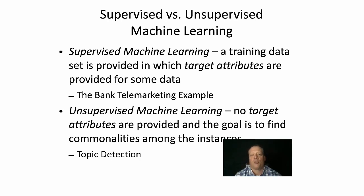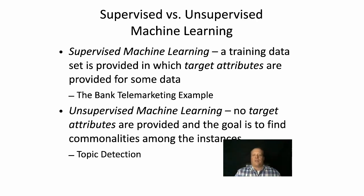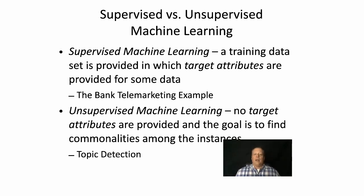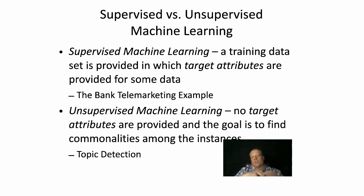Another distinction we need to draw is between supervised learning and unsupervised learning. In supervised machine learning, a training data set is provided in which the target attributes are provided — for example, in the bank telemarketing dataset we know whether someone took the promotion. But in some cases we just want to explore the data, or we're not sure what the labels are, and there is no target attribute — the goal is to find commonalities. Topic detection is a classic example: if I give you a bunch of tweets and say find the topics they share, you don't have that list ahead of time, so you have to explore and cluster similar tweets together.